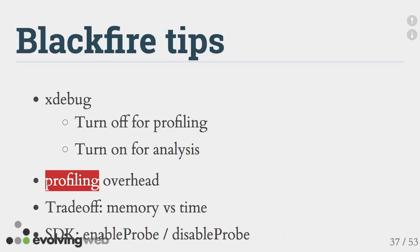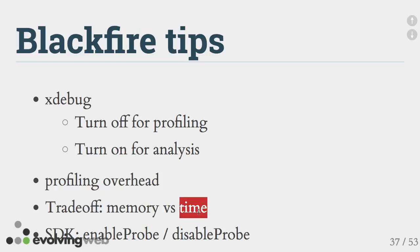Blackfire does introduce profiling overhead when running a profile — the request time can be 50% slower. However, despite the slowdown it still gives you reasonable relative numbers, so it doesn't introduce so much noise that it confuses you. Don't be confused when you see different absolute numbers in Chrome Inspector versus the Blackfire report. Also keep in mind the memory versus time trade-off — in computer science, you can always add more caches, but that means your sysadmin's server bill goes up because you need more expensive servers with more RAM.